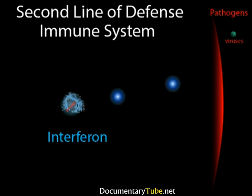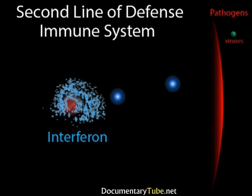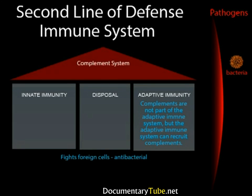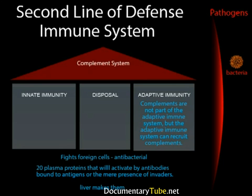Interferon is a protein produced by a cell infected by a virus. There's really no hope for a cell once the virus enters the lytic pathway. However, as it's being attacked by the virus, the cell will produce interferon. The interferon won't save that cell, but it will signal neighbor cells to strengthen themselves against viral attack. Complements are involved in fighting foreign cells, which are generally bacteria. The complement system is made up of 20 plasma proteins made by the liver, which are then released into the bloodstream. Like blood coagulation factors, these proteins stay inactive in the blood serum until something activates them.